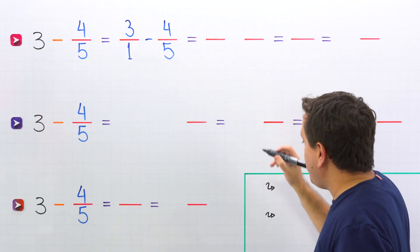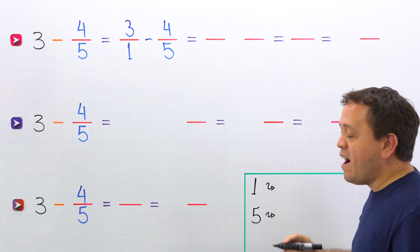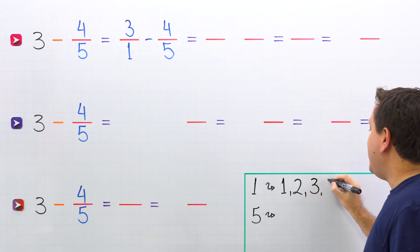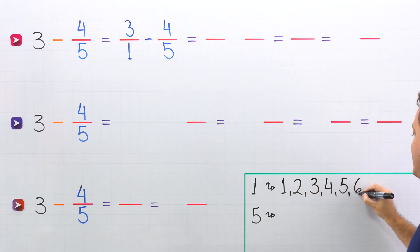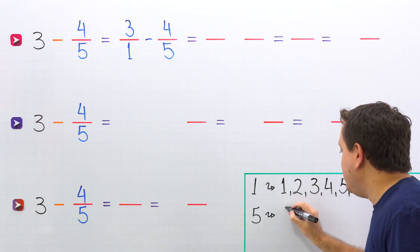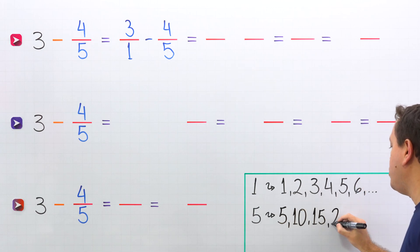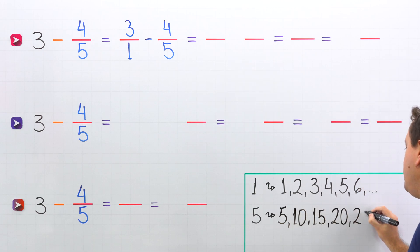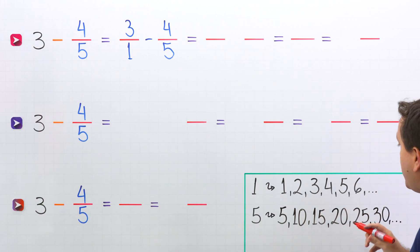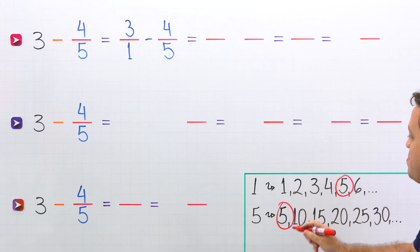The denominators are 1 and 5. The first multiples of 1 are 1, 2, 3, 4, 5, 6, and so on. The first multiples of 5 are 5, 10, 15, 20, 25, 30, and so on. As you can see, the smallest number we can find on both lists is 5. Then 5 is the least common denominator.